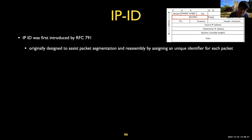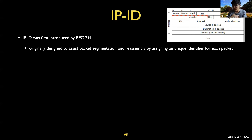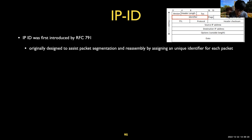IP ID is the IP packet identifier. It was originally designed to assist packet fragmentation and reassembly by assigning a unique identifier. If one packet is too large for a router to handle, the router can split it into two packets. From the receiver's side, they have to combine these packets to interpret them correctly. To combine them, there must be a hint — they share the same identifier. The router that split the packet copies the identifier and shares it with both packets, so the receiver can combine two packets easily if they share the same identifier.